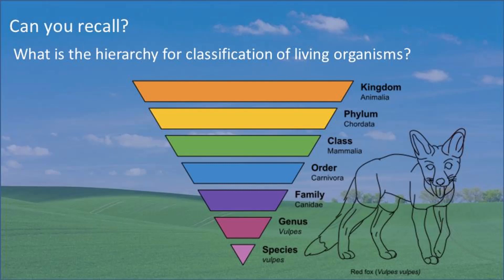The first question is: what is the hierarchy of classification of living organisms? The hierarchy is: first, Kingdom; second, Phylum; third, Class; fourth, Order; fifth, Family; sixth, Genus; and seventh, Species. This is the hierarchy of living organisms.